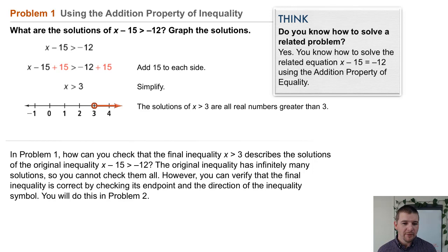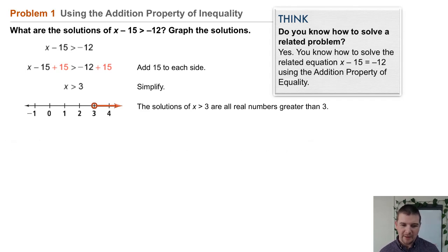So you'll notice that a lot with items in this lesson. First you ask, what are the solutions? And that's really like isolate the variable. So our first task is to isolate x and then to graph the solutions. In this case, we have x - 15 > -12. So we're going to add 15 to both sides of the inequality to find x > 3.